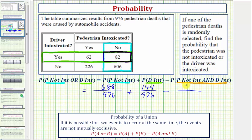Which would be 82 divided by 976. Now let's go ahead and express this probability as a simplified fraction, decimal, and percent.